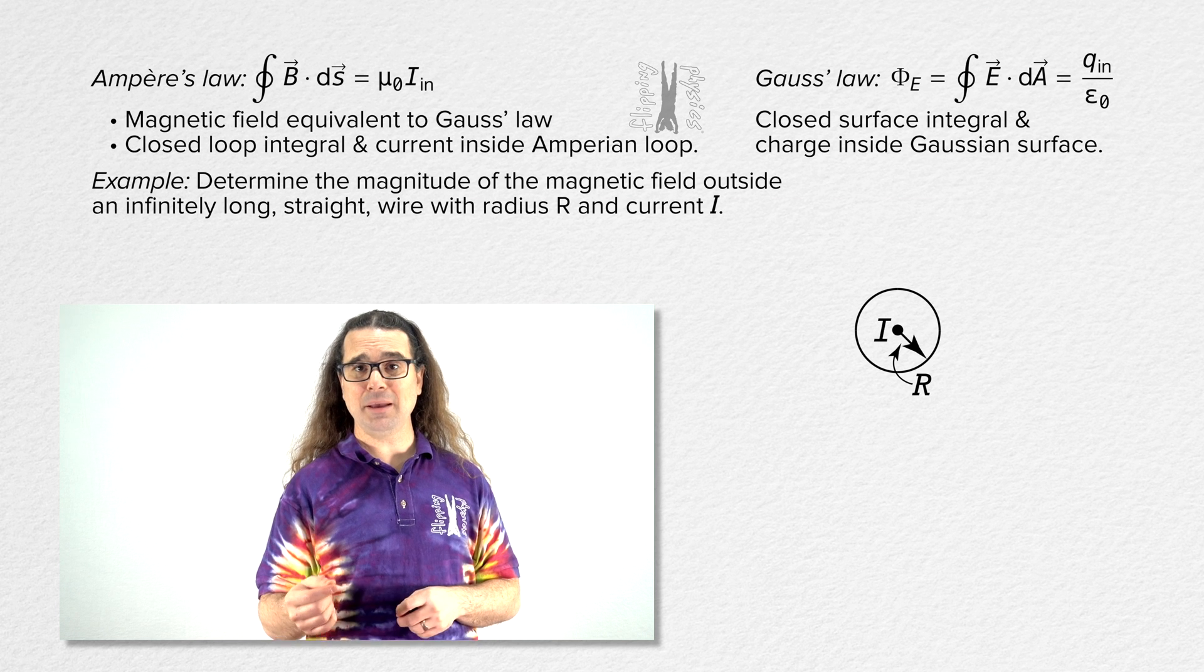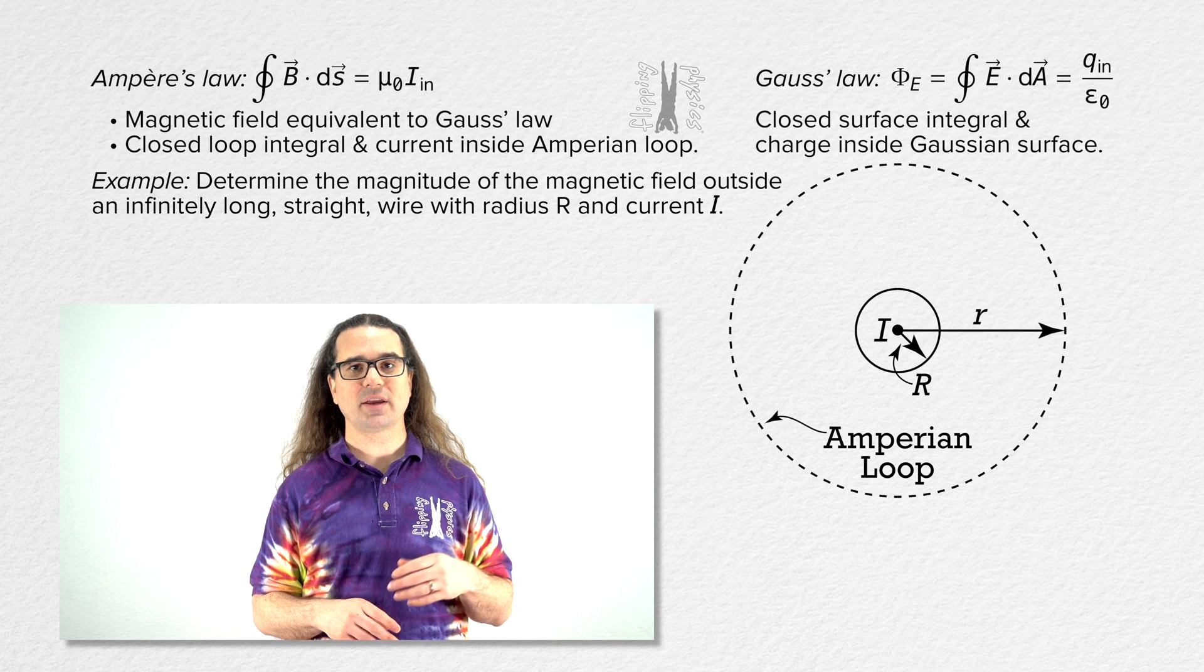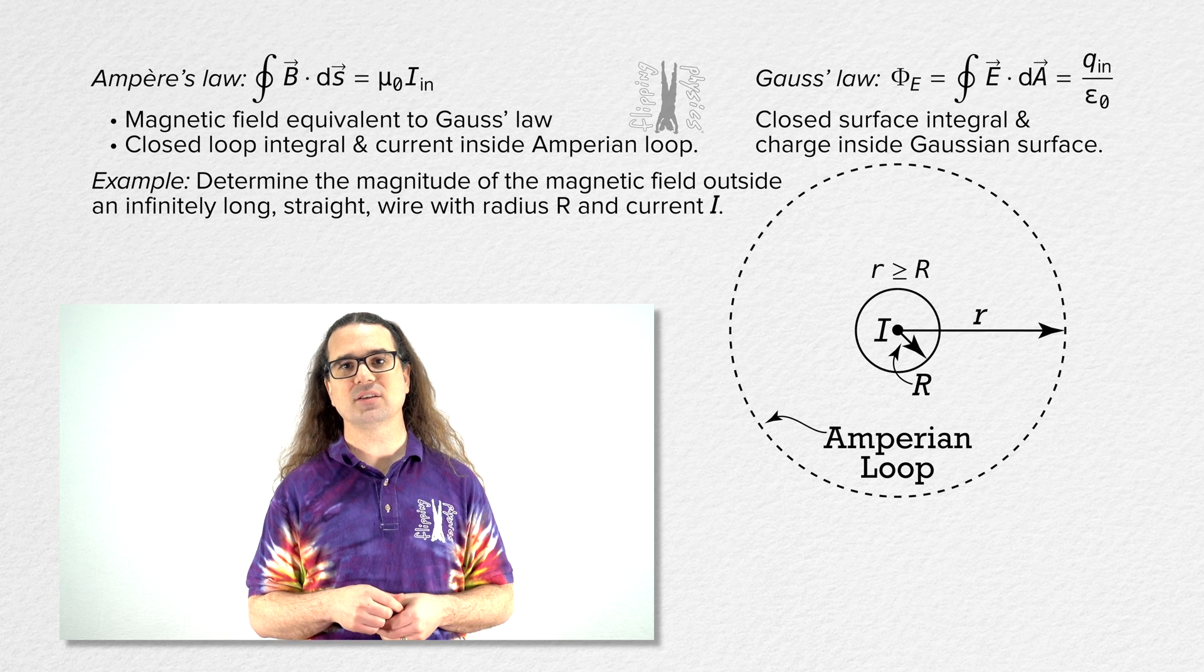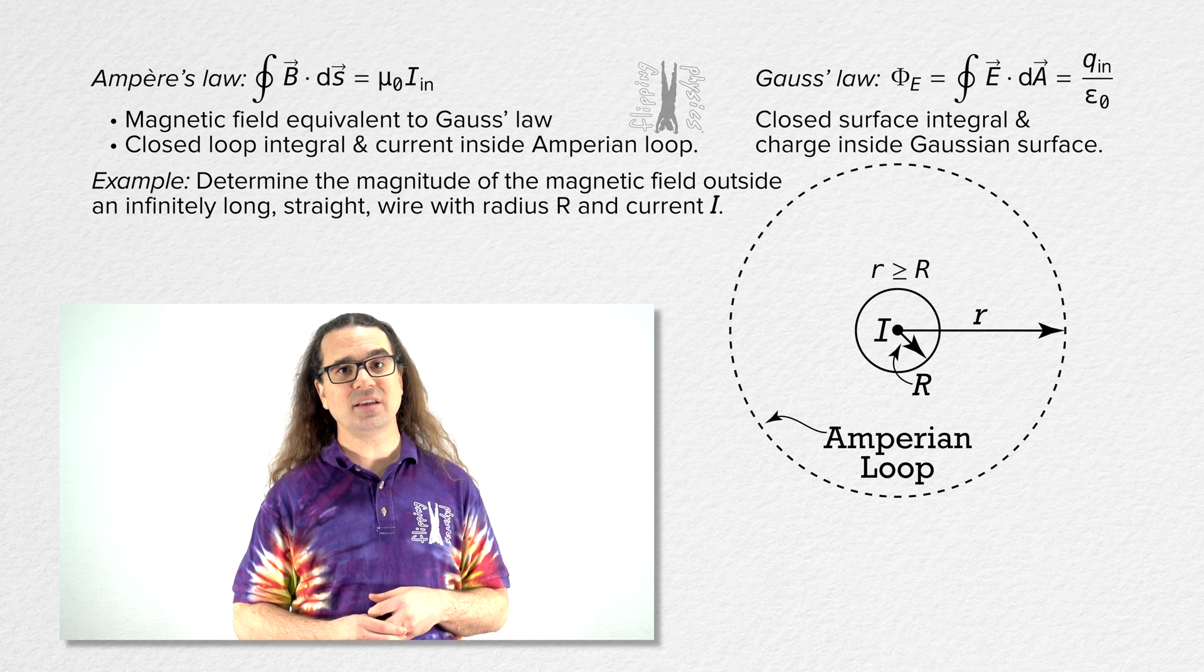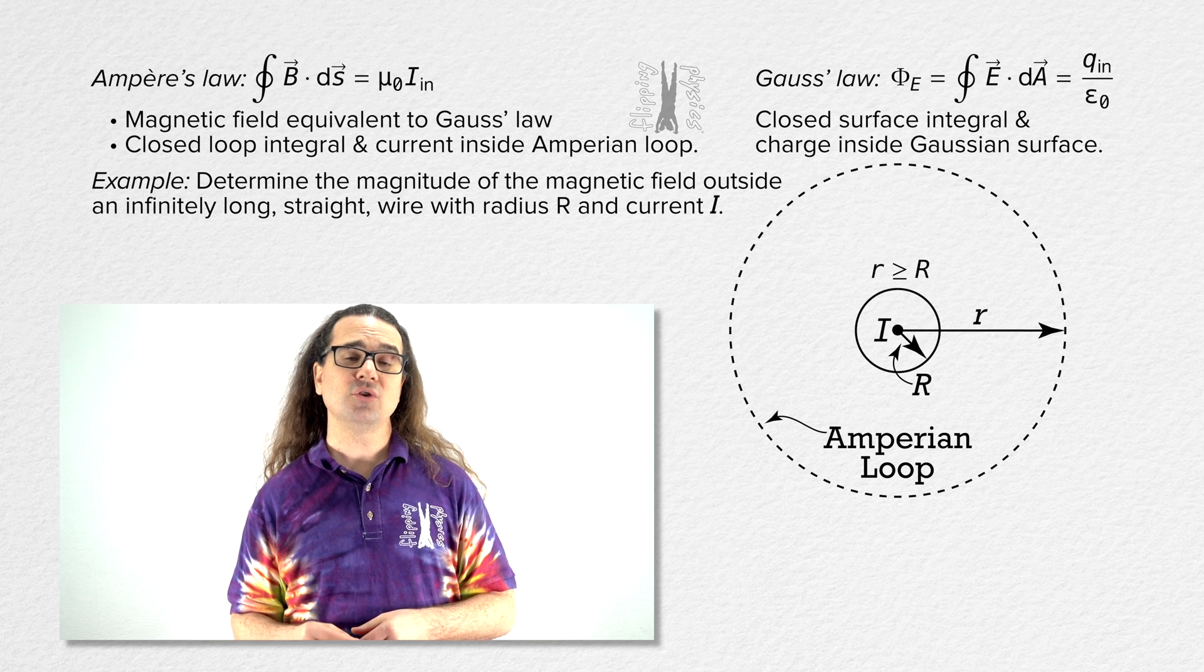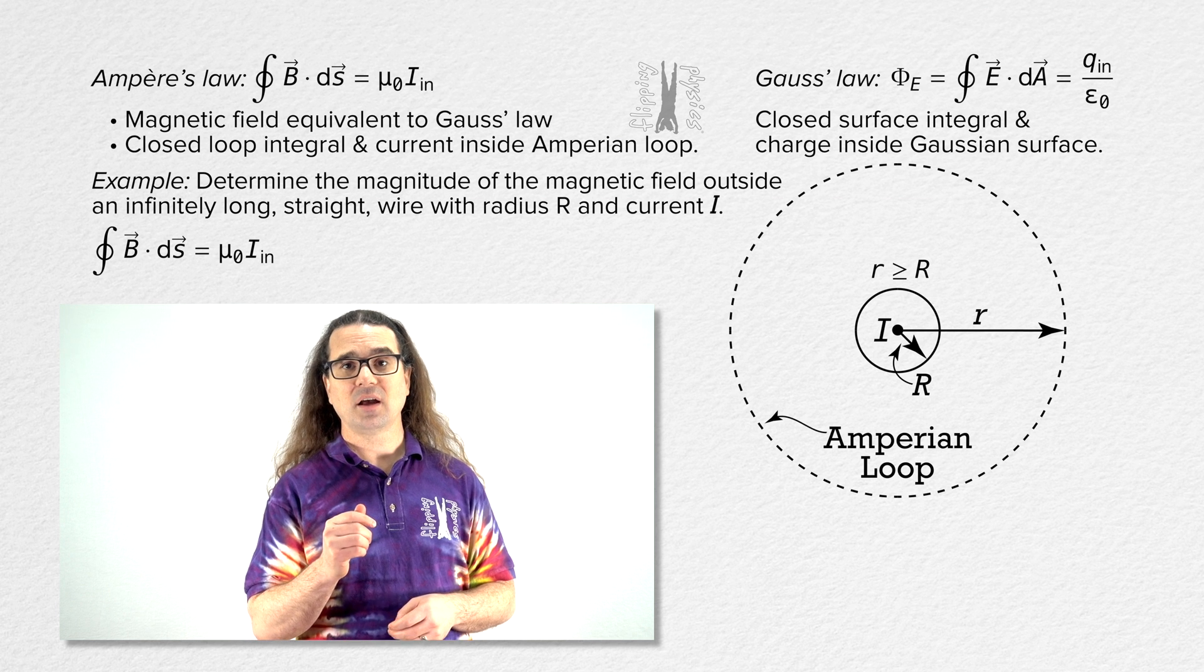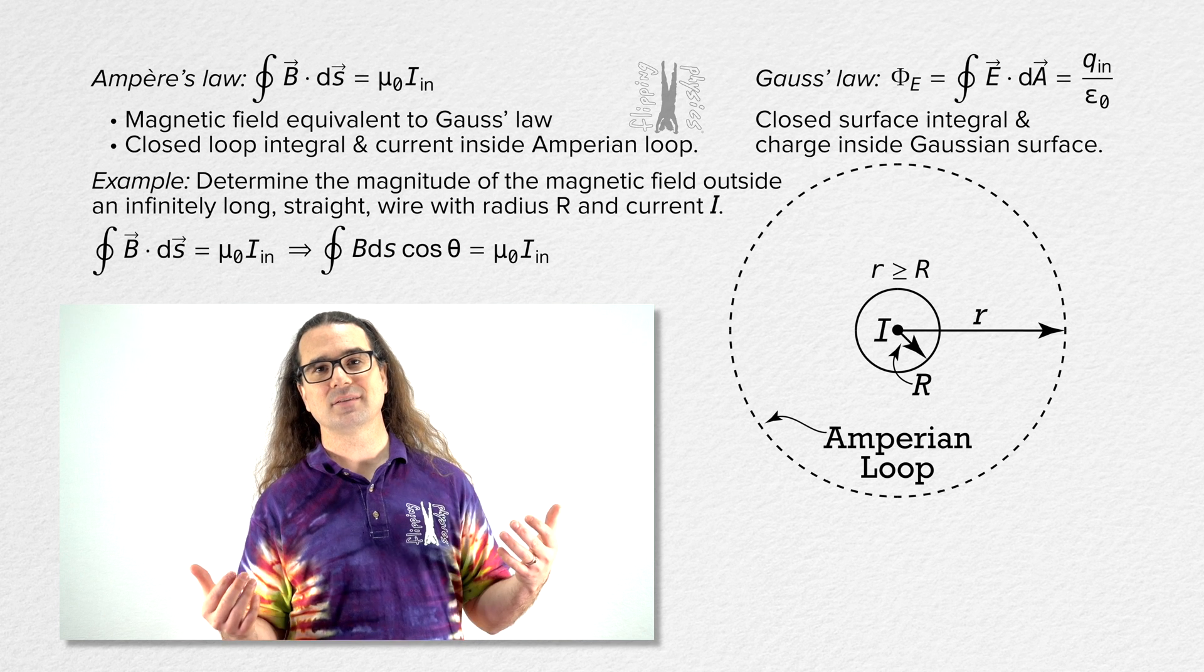Let's draw an Ampereian loop in the shape of a circle with radius lowercase r, which is greater than or equal to the radius of the wire capital R, and that Ampereian loop is concentric with the center of the wire. Now we are going to use Ampere's Law. However, rather than using the dot product version, let's use B ds cosine theta instead.